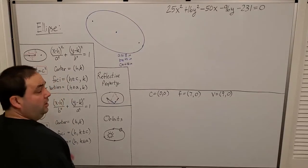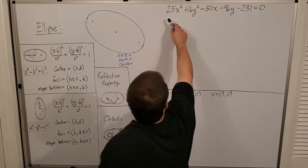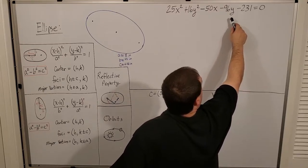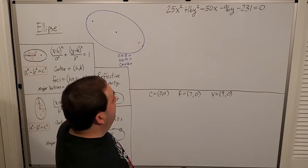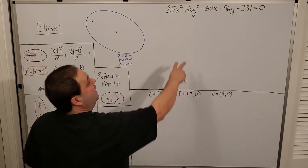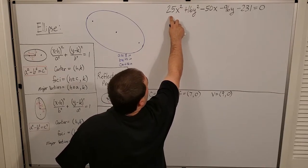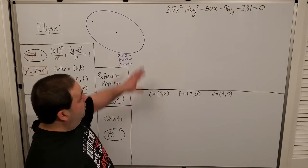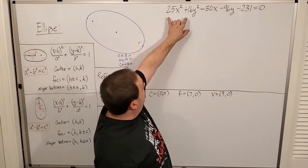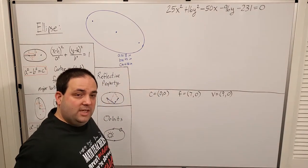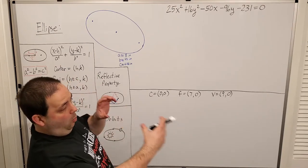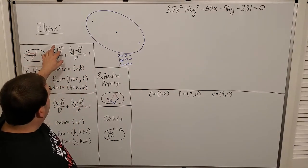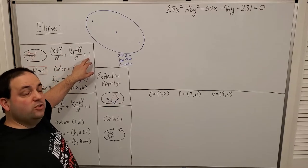Let's look at an example: 25x² + 16y² − 50x − 96y − 231 = 0. I know this is an ellipse because both squared terms are the same sign (both positive), but the coefficients 25 and 16 are not equal — so it's an ellipse, not a circle. I need to get it into standard form with completed squares equal to 1. I'll start by regrouping: 25(x² − 2x) + 16(y² − 6y) = 231.